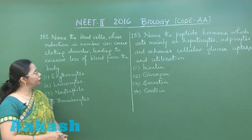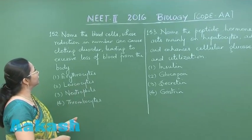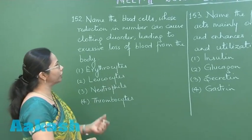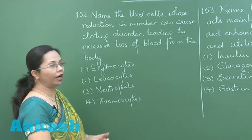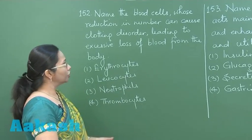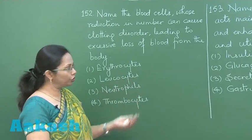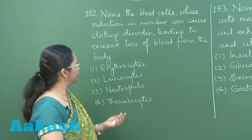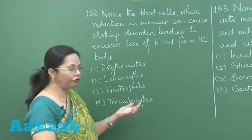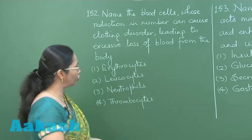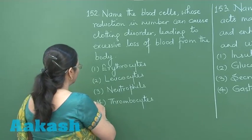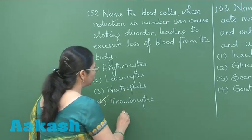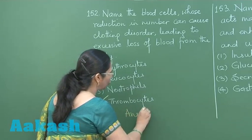Question 152: The blood cells whose reduction in number can cause a clotting disorder with excessive bleeding. Blood clotting is a function of platelets — the thrombocytes — so the direct answer is thrombocytes, option number 4.